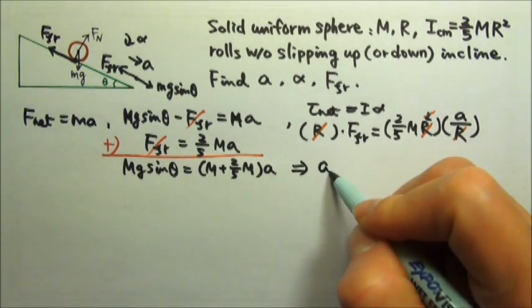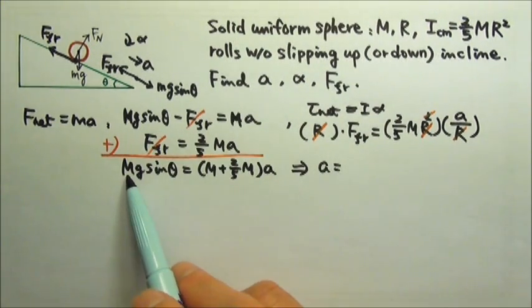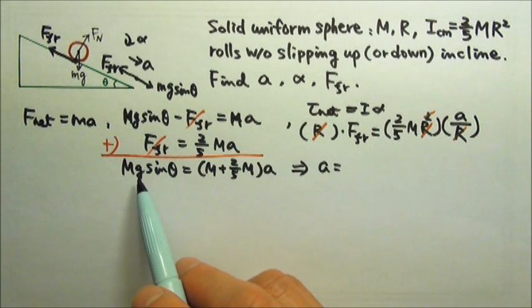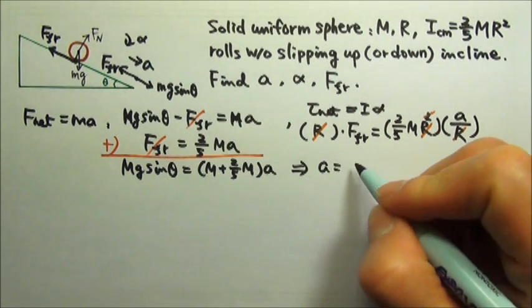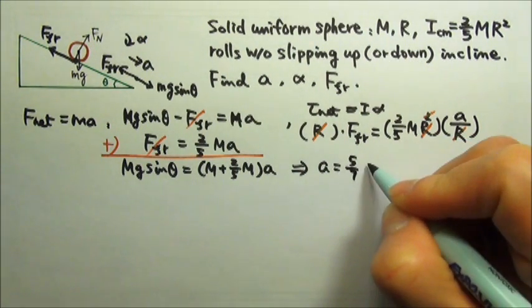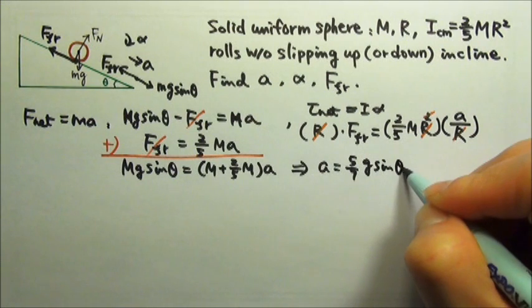Therefore, the acceleration would equal to, the m's cancel, and then on this side I have 1 plus 2 fifths, which gives me 7 fifths. So this is going to be 5 sevenths g sine theta.